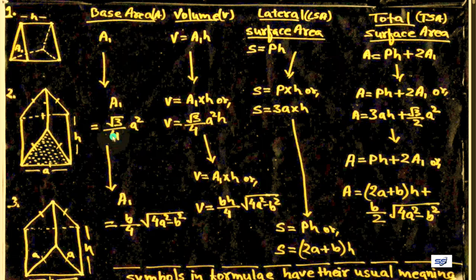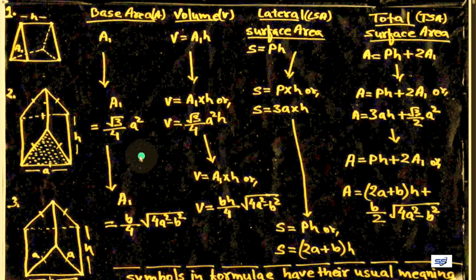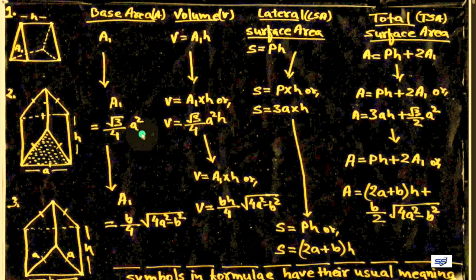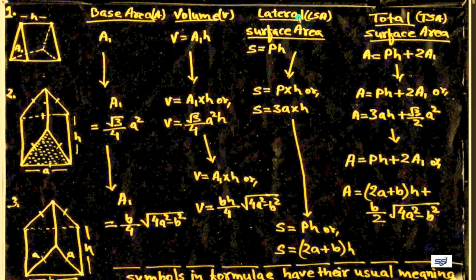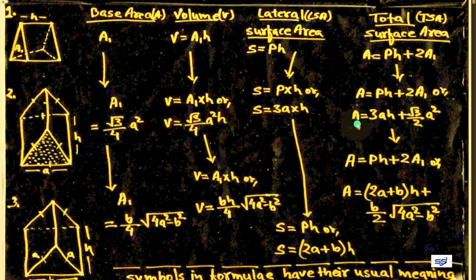In figure 2 we will find the same things: base area, volume, lateral surface area, and total surface area using different formulas. The base is an equilateral triangle, so area of base A = root 3 upon 4 times a squared. Volume V = A1 into H, or root 3 upon 4 times a squared times H. Lateral surface area S = P into H, or S = 3as. Total surface area A = 3as plus root 3 upon 2 times a squared. Using this formula we will calculate the requirement of the second prism.